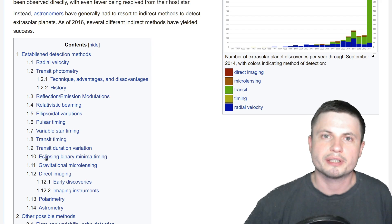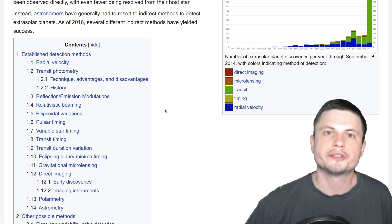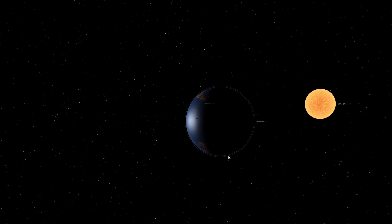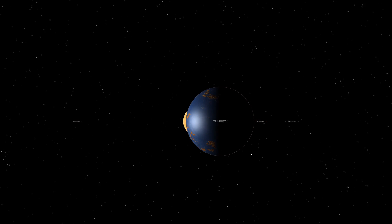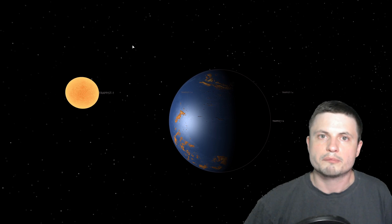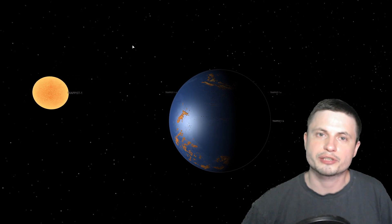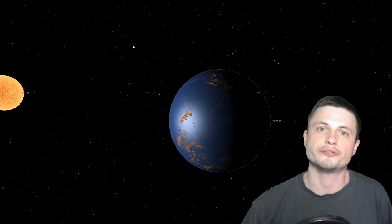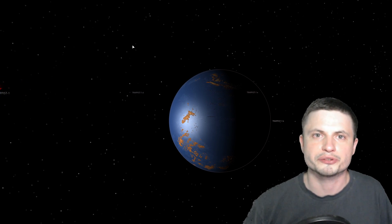There are a few other methods that have been used and have been successful as well and for the most part transit method has been the most successful method to date. We've discovered way more planets this way than in any other way. So by seeing planets pass in front of the star we're usually able to very accurately predict their existence. But the scientists often look for new methods and try to discover new techniques to find even more planets in our goal to eventually find something that sort of resembles our own planet.